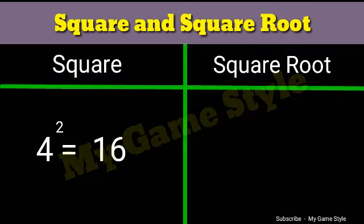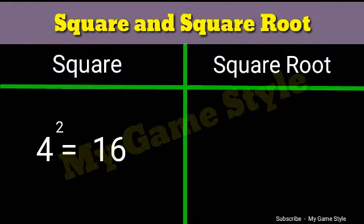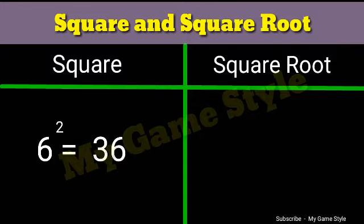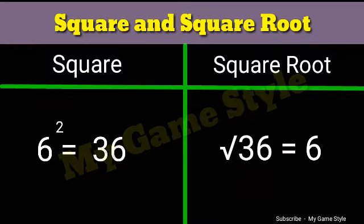4 square is equal to 16. Square root 16 is equal to 4. 5 square is equal to 25. Square root 25 is equal to 5. 6 square is equal to 36. Square root 36 is equal to 6.